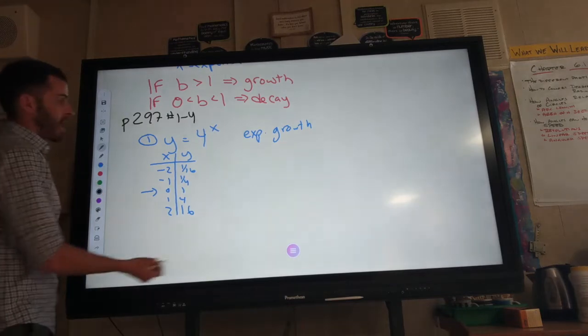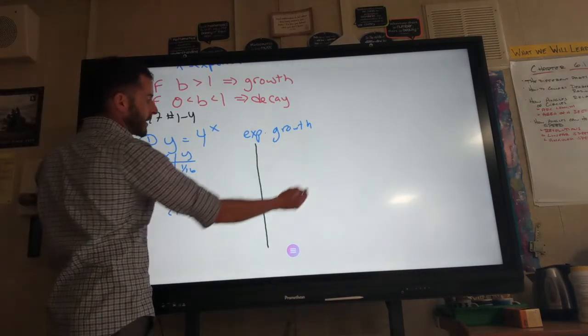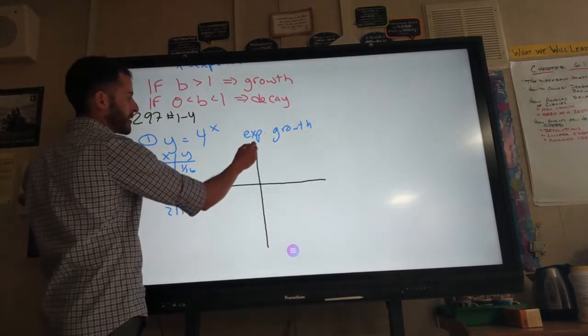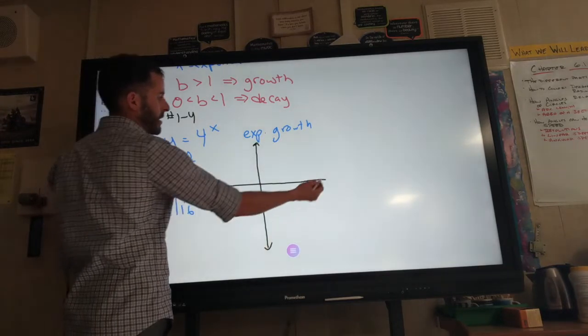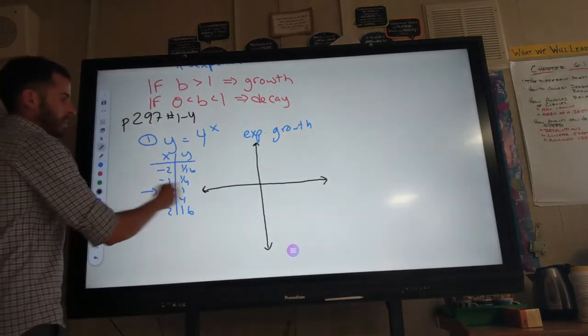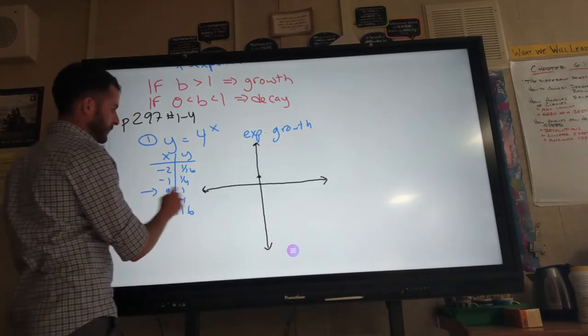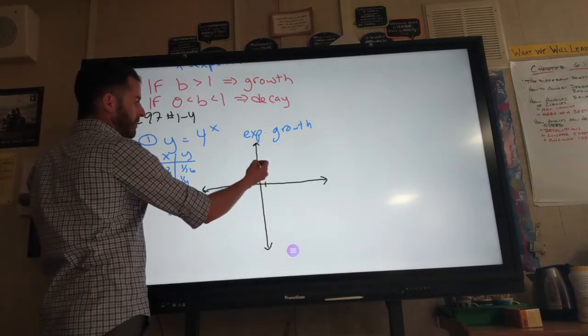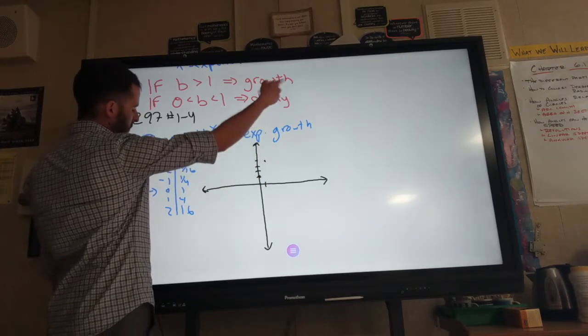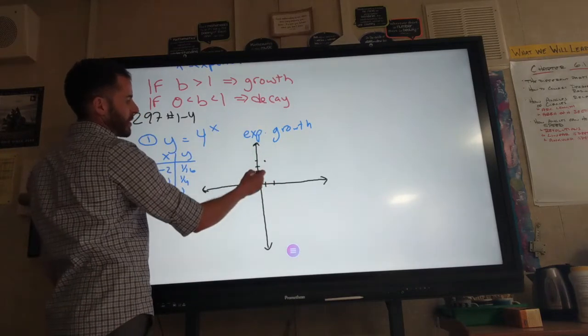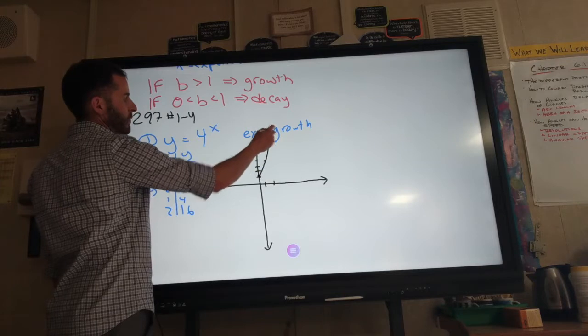I'll do a rough graph. You should be looking at your calculator, but you also need to practice because I think we're going to learn a new vocab word today. So we have a point at 0, 1. 1, 4. I'm not going to graph 2, 16, it's up here, so I get that it's going to go up really fast.